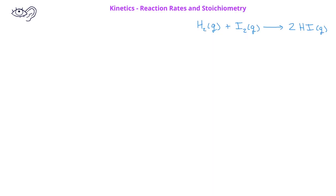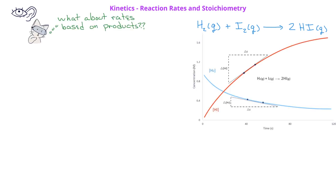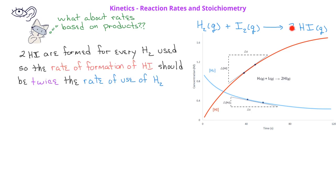We saw how to talk about the rate of a reaction based on reactant concentration changes, but what about the products? As this figure shows, there seems to be a different rate of change — a different slope to the line — for the concentration of hydrogen iodide compared to hydrogen. This should be expected because hydrogen iodide has two moles produced for every one mole of hydrogen consumed, so the rate of formation of hydrogen iodide is twice the rate of consumption of hydrogen.